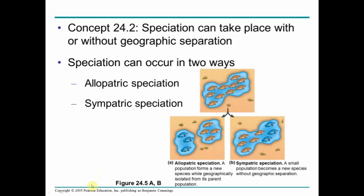Continuing — this is part two of chapter 24, different kinds of speciation: allopatric speciation versus sympatric speciation. There are a number of slides that talk about this, so I'll breeze through those. These are pretty straightforward.